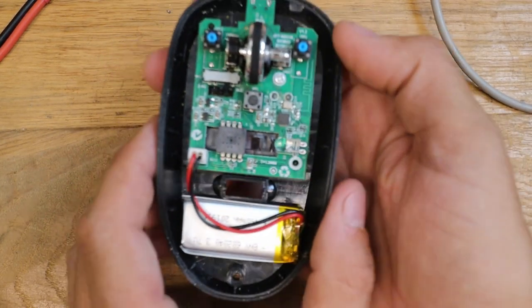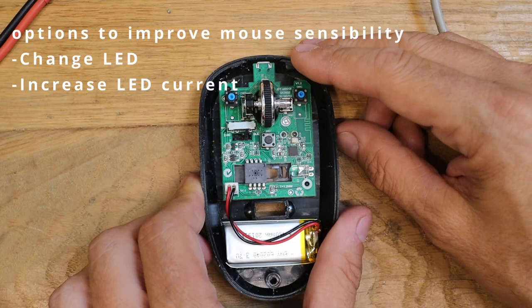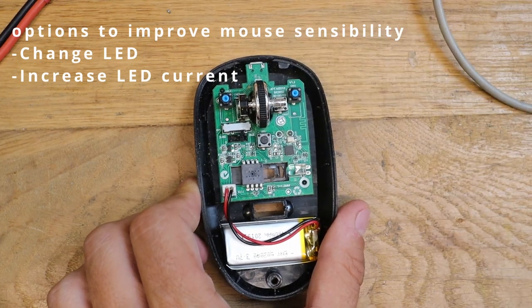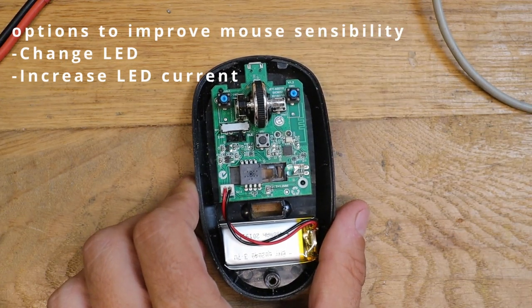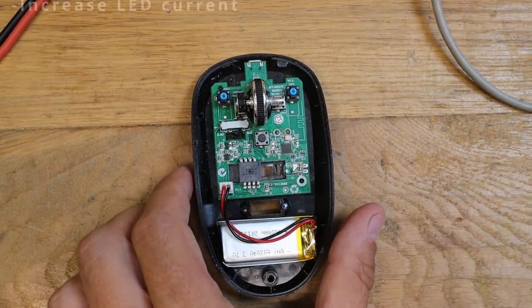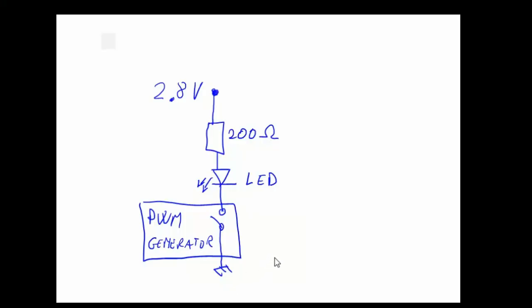We can do two things: either we replace the LED or we change some parts in order to boost the current on the LED. Since I don't have an infrared LED, let's see now what are the parts you need to change in order to increase the current.